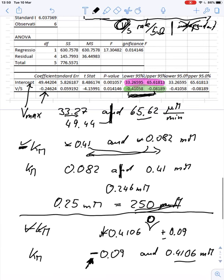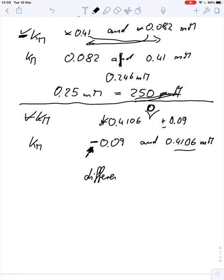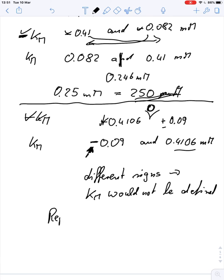So if we find something like that, that we have different signs here in the regression output for the Km, if we find different signs, this indicates that we cannot really make a good decision about Km. So Km would not be defined. And in this case, we really should either repeat the experiment, or if we can't do that because of time constraints, that means in this case you should have used the replacement data.